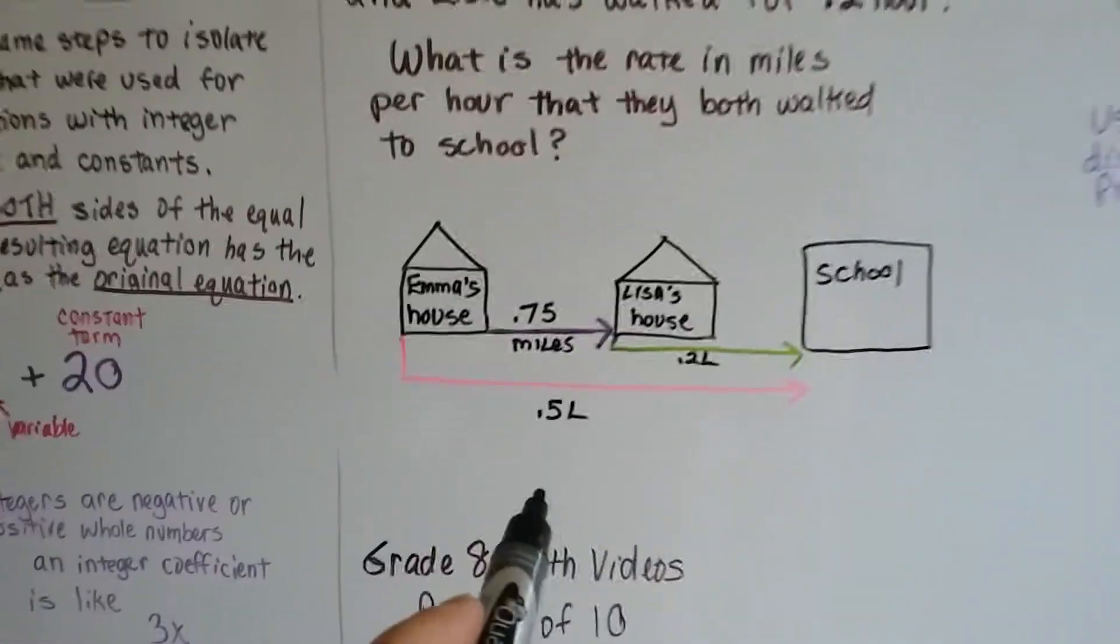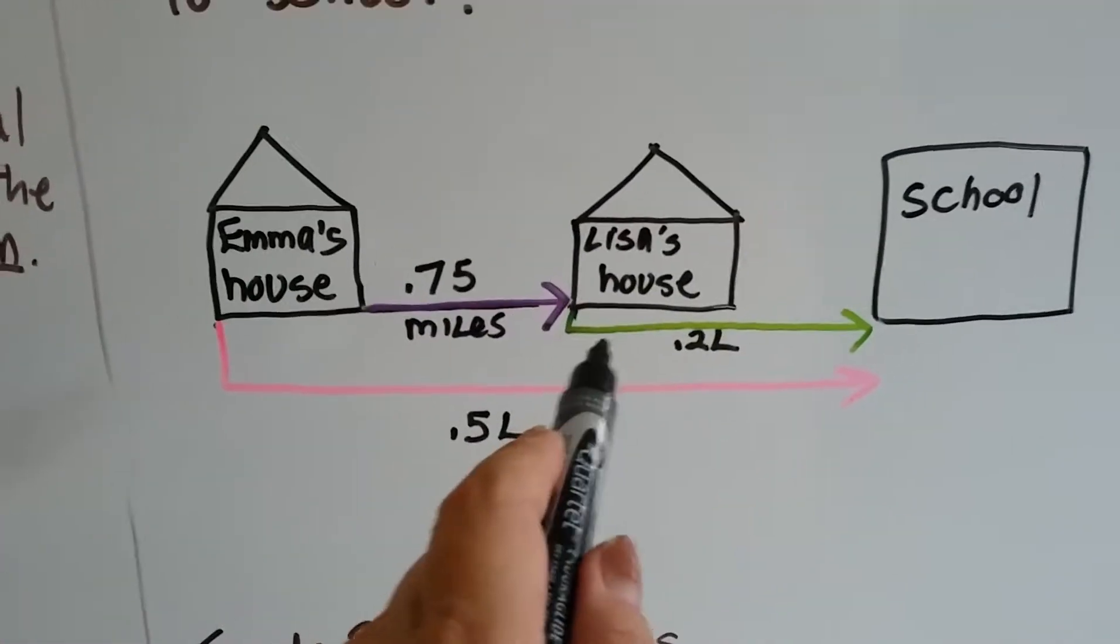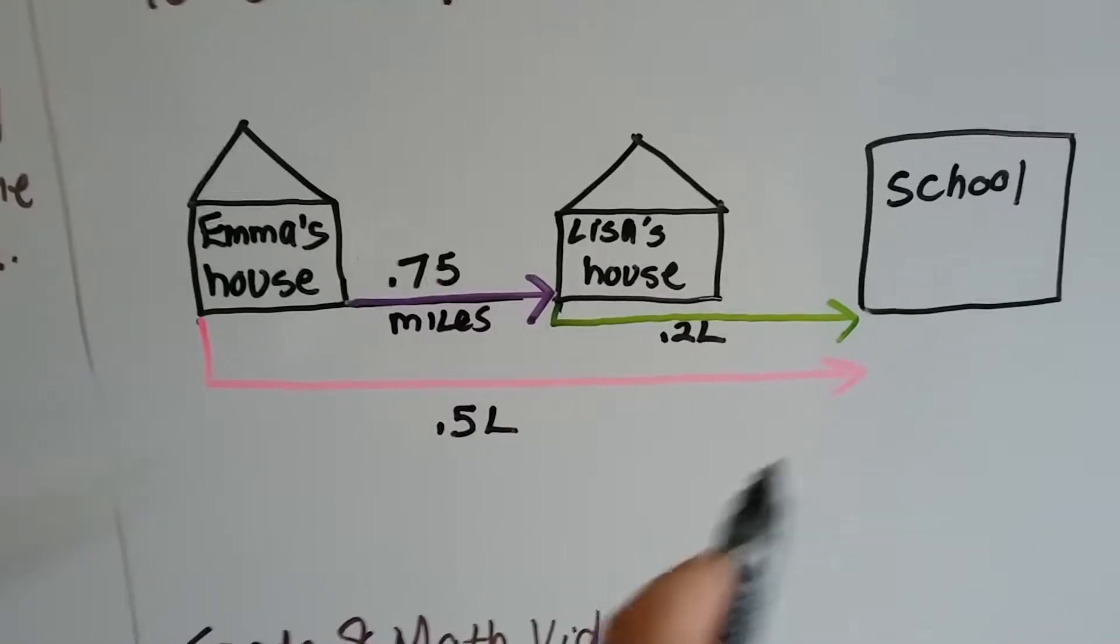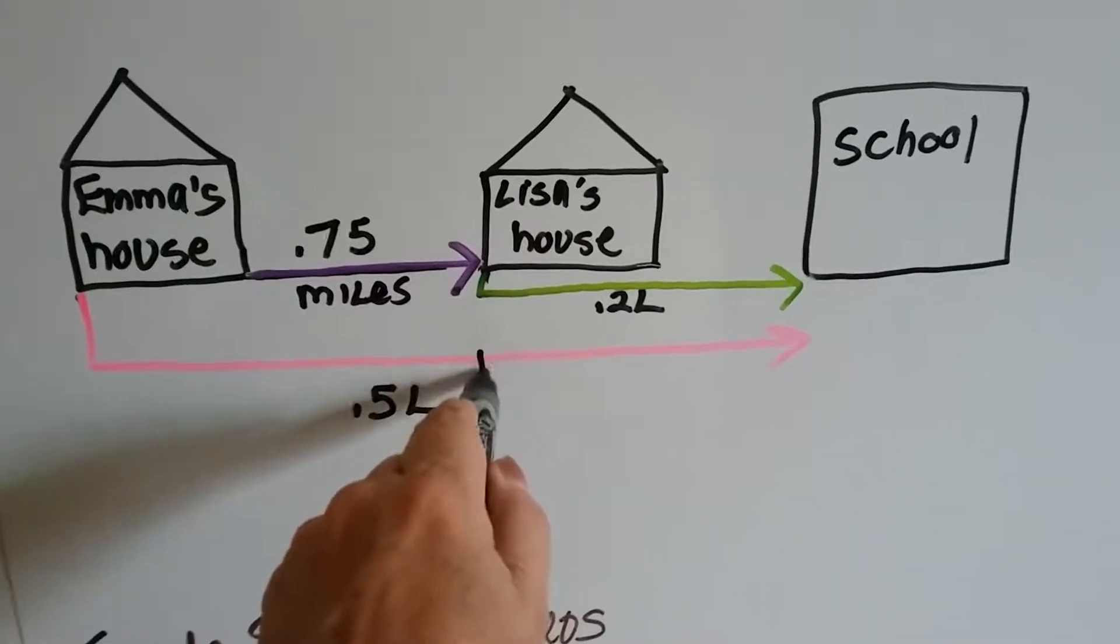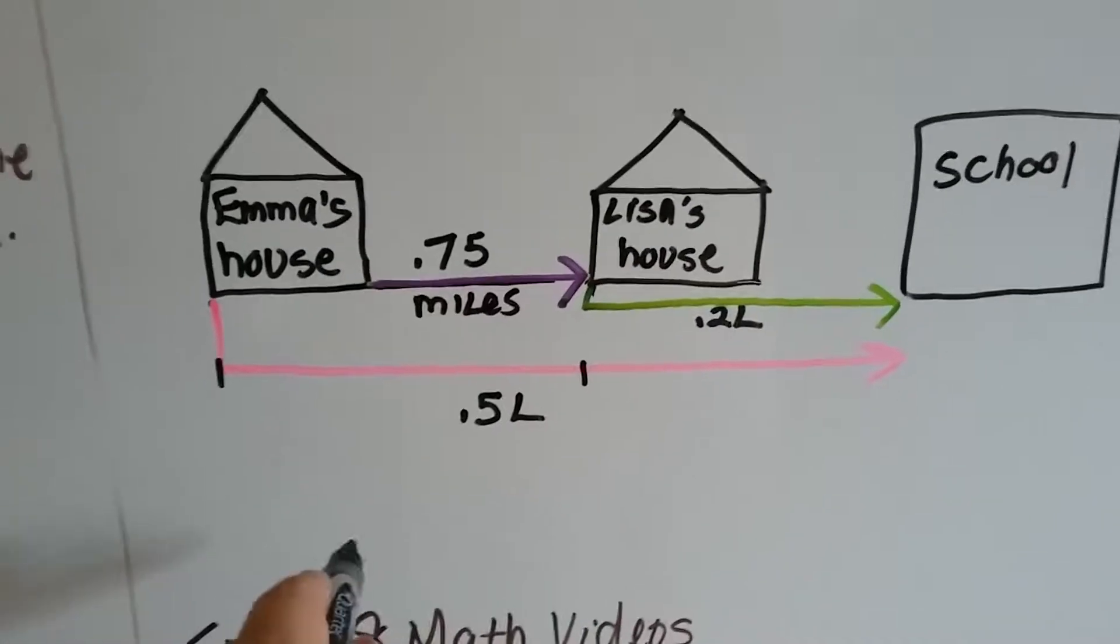From her house. So you already know right now that if from here to here is 2 tenths, then that means from here to here must be 3 tenths, right?